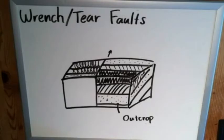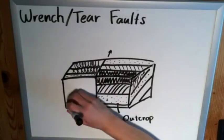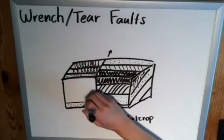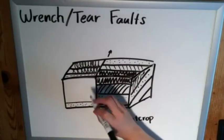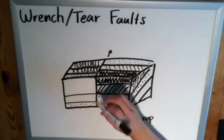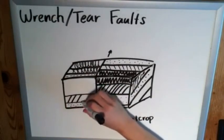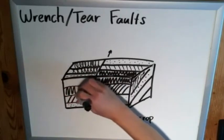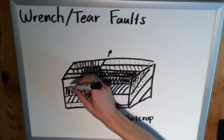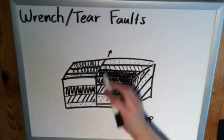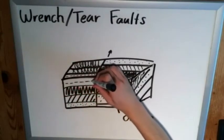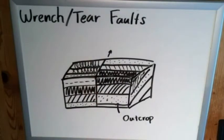We'll draw it such that this one comes down like that, the striped one is now down here, and the shaded one is right there. Then we've got a completely new layer that we don't see on the top — maybe that's our dashed-line one because it could have come before it. And that's what a wrench or a tear fault is.